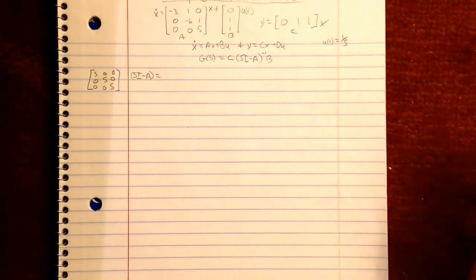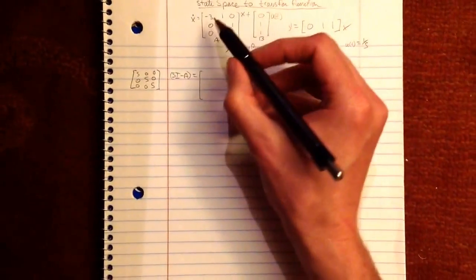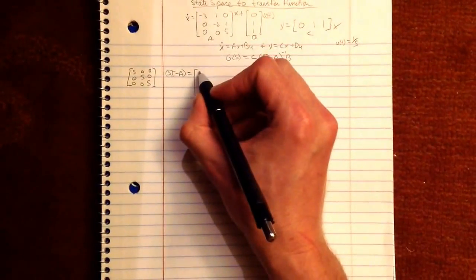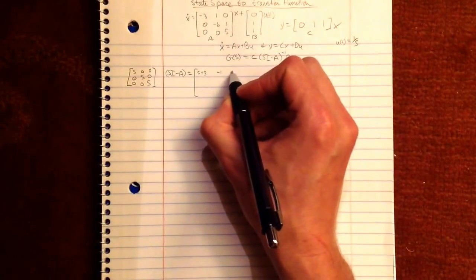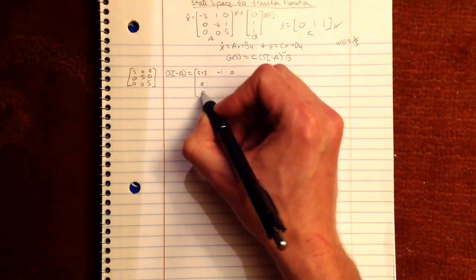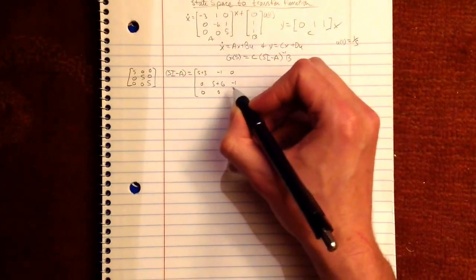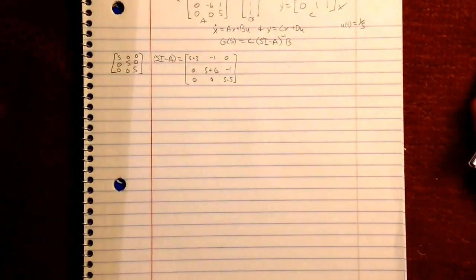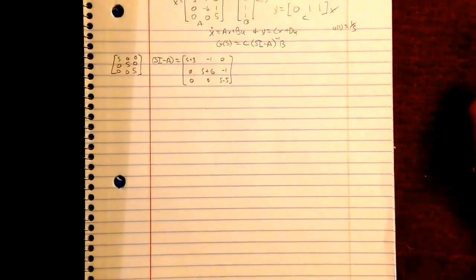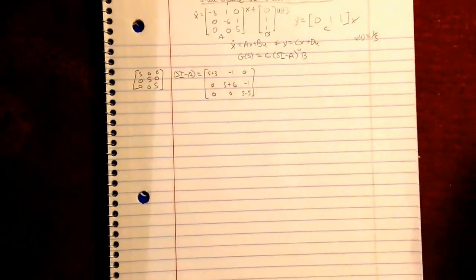And you're minusing A from that. So when you do that, you get S plus 3, negative 1, 0, 0, S plus 6, negative 1, 0, 0, S minus 5. And you can tell how much your teacher likes you based on how many zeros he puts in the matrix. So there's S I minus A.